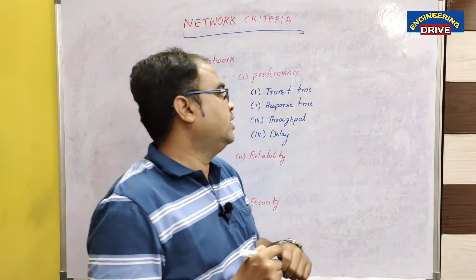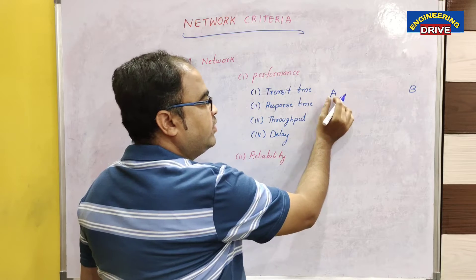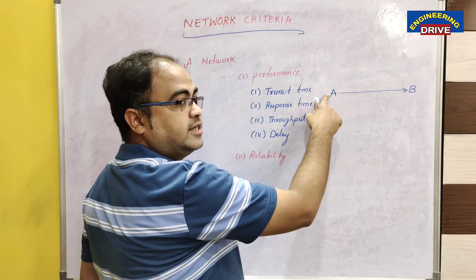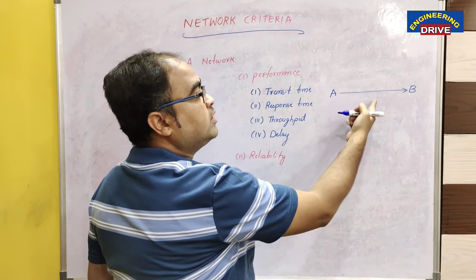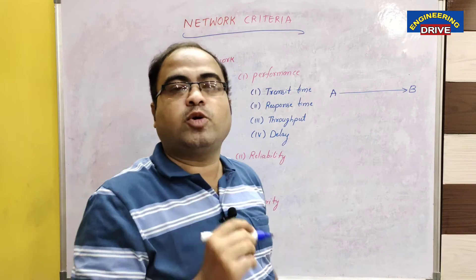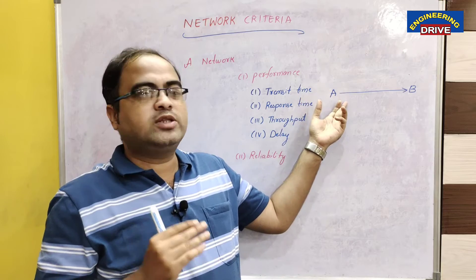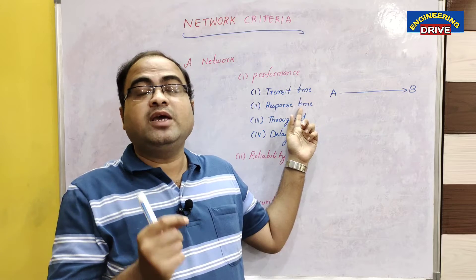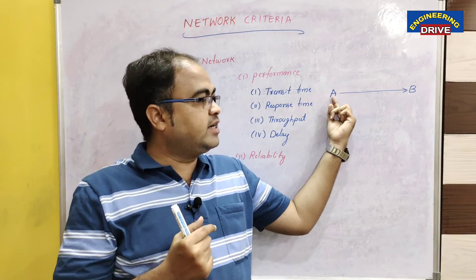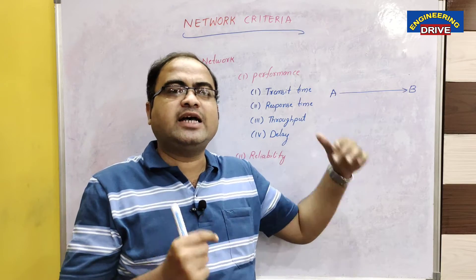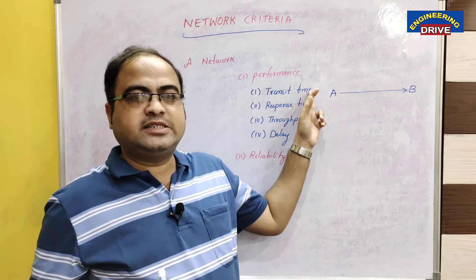In order to find out the performance of a network we need to know these four attributes. What is the meaning of transit time? Let us say these are two devices which want to communicate with each other — device A and device B. Transit time is the amount of time it takes to transmit the data from device A to device B. Response time is how long device A will take to respond when device B has requested data from A. Transit time and response time must be lower in order to have a good performance in a network.